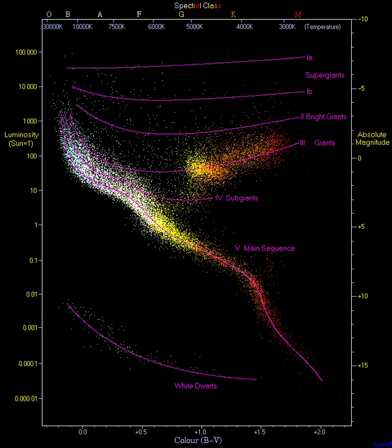The Hertzsprung-Russell diagram, abbreviated as HR diagram, HRD, is a scatter plot of stars showing the relationship between the stars' absolute magnitudes or luminosities versus their stellar classifications or effective temperatures.